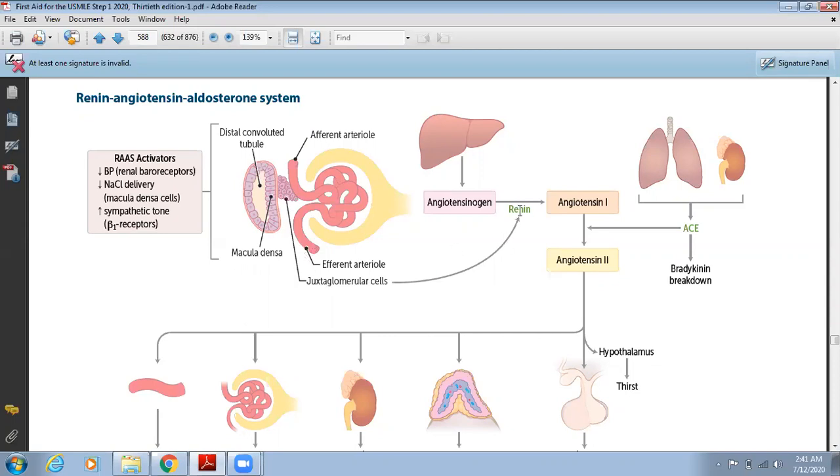It will pass signals to the juxtaglomerular cells to release renin. So the first activator for RAAS is decreased blood pressure by renal baroreceptors. Second is sodium chloride delivery from macula densa cells. And third is sympathetic tone stimulation through beta-1 adrenoreceptors. These three are the positive activators for renin release.